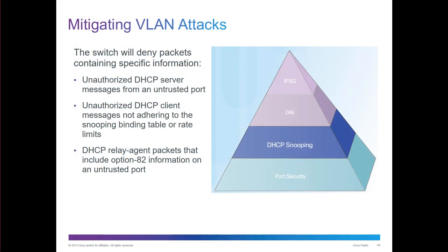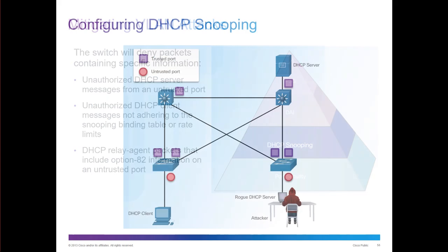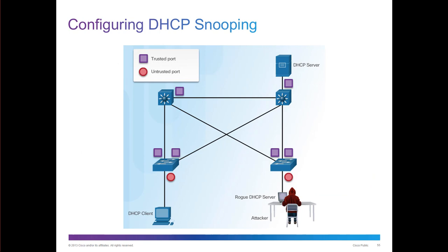Mitigating VLAN and DHCP attacks can involve blocking unauthorized DHCP servers on untrusted ports, setting unauthorized DHCP client messages not adhering to snooping binding tables as invalid, and setting DHCP relay agent packets with option 82 on untrusted ports to be dropped. Basically, those ports cannot act as a DHCP server — DHCP is only issued from trusted ports, while anything facing access layer switches would be an untrusted port.